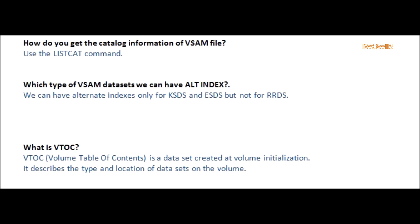Question: Which type of VSAM data sets can have an alternate index? Answer: We can have alternate indexes only for KSDS and ESDS, but not for RRDS.